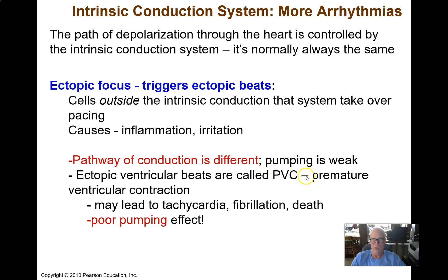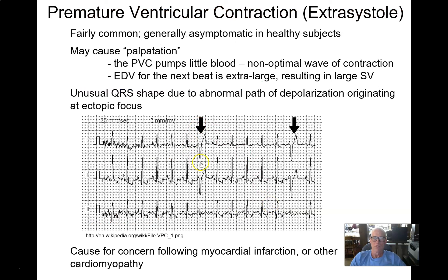But if someone has recently had a cardiac event — a heart attack, a myocardial infarction — and their PVCs start happening, that's a bad sign. That'll trigger an alarm in the intensive care unit because PVCs in someone who has recently had a heart injury may lead very quickly to ventricular tachycardia and then fibrillation and death. Here's a PVC — an ectopic beat. The QRS complex should look like all the other normal beats orchestrated by the intrinsic conduction system, but an ectopic focus has triggered a random wave of depolarization through the heart, producing a very different-looking waveform indicating an ineffective contraction.